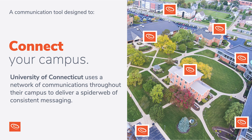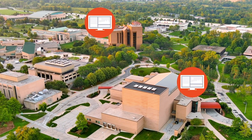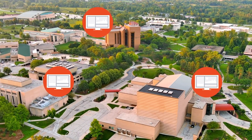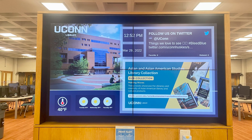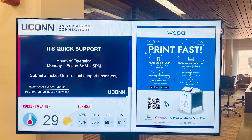Carousel is a communication tool designed to connect your campus, and this is where we like to talk about the network effect. The University of Connecticut uses a network of communications throughout their entire campus to deliver a spiderweb of consistent messaging. Share accurate real-time information with your entire campus at a moment's notice, creating connected students, parents, and faculty. They have 700 displays across the main campus and six regional locations, sharing things like room scheduling information, scholarships, internships, and different work opportunities. They even have a group of students that log in and share content specific to students.